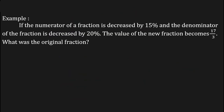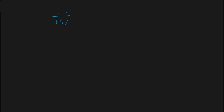So 17x upon 16y is the new fraction when the numerator is decreased by 15 percent and the denominator is decreased by 20 percent. In the question, the new fraction is given as 17 upon 3, so 17x upon 16y equals 17 upon 3. We need to find x upon y, the original fraction.